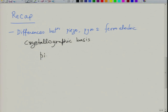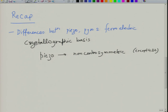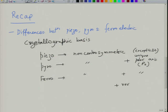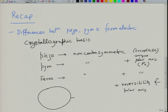As we said, a piezoelectric material is non-centrosymmetric — all the non-centrosymmetric point groups except 432 are piezoelectric. Pyroelectrics are those which are non-centrosymmetric plus they have a unique polar axis. As a result they have a spontaneous polarization. Ferroelectrics are non-centrosymmetric plus unique polar axis plus reversibility of the polar axis.